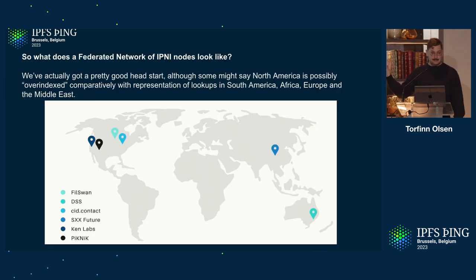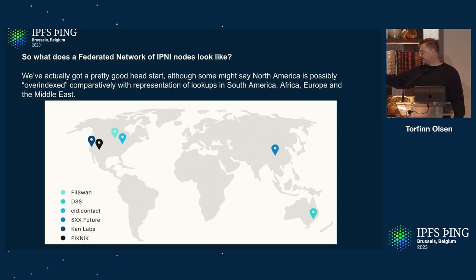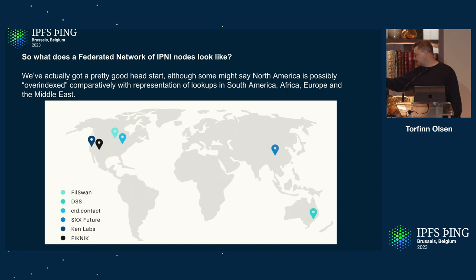These are actually the instances of the IPNI that are running — they're all in different states. We have a very heavy presence here in North America. Ultimately what we want is for this map to be broken down into zones that service the lookup frequency. We'll be making a very intentional push to find folks interested in operating an indexer instance in South America, Africa, the Middle East, and Europe, so that we have more representation closer to where the lookups happen. We recently added Australia — they're actually pretty close to ingesting the ad chain — and we also have our friends in China.